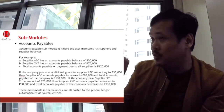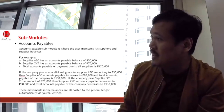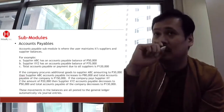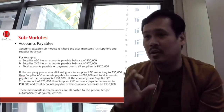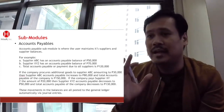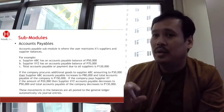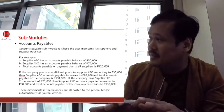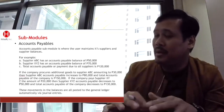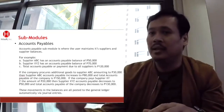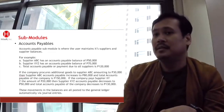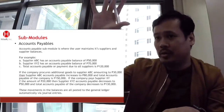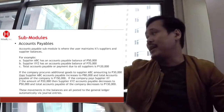But if you don't have the system, you have to do it manually. All the user has to do is just encode the payment — and automatically it will decrease and all the reports will be affected.